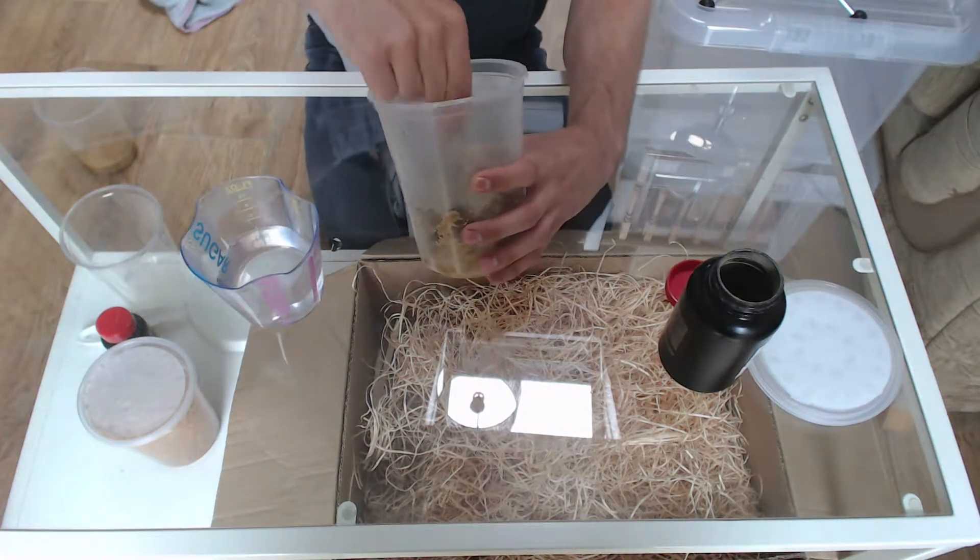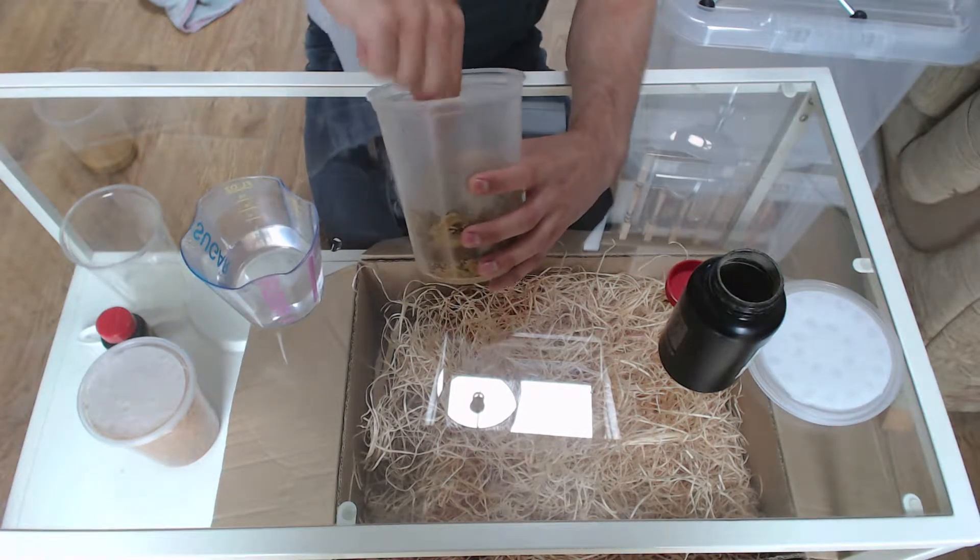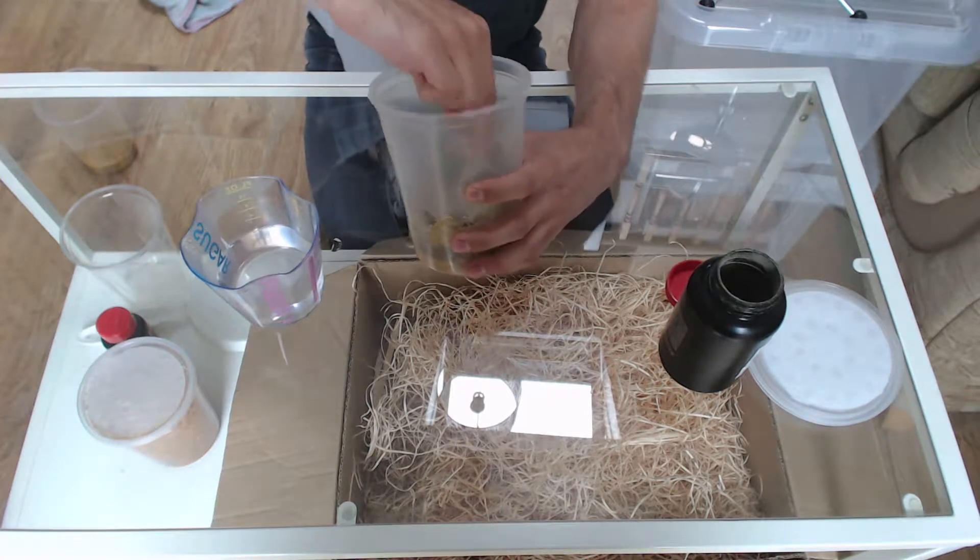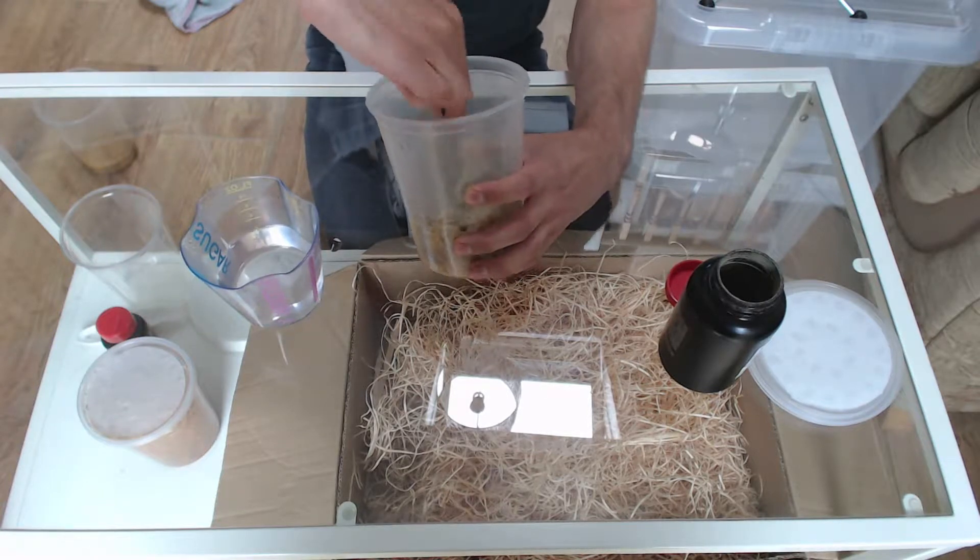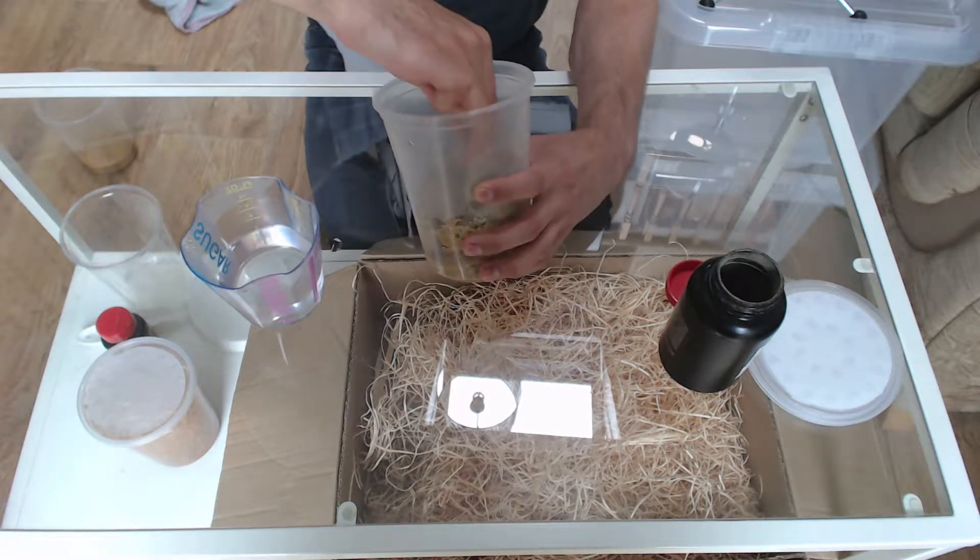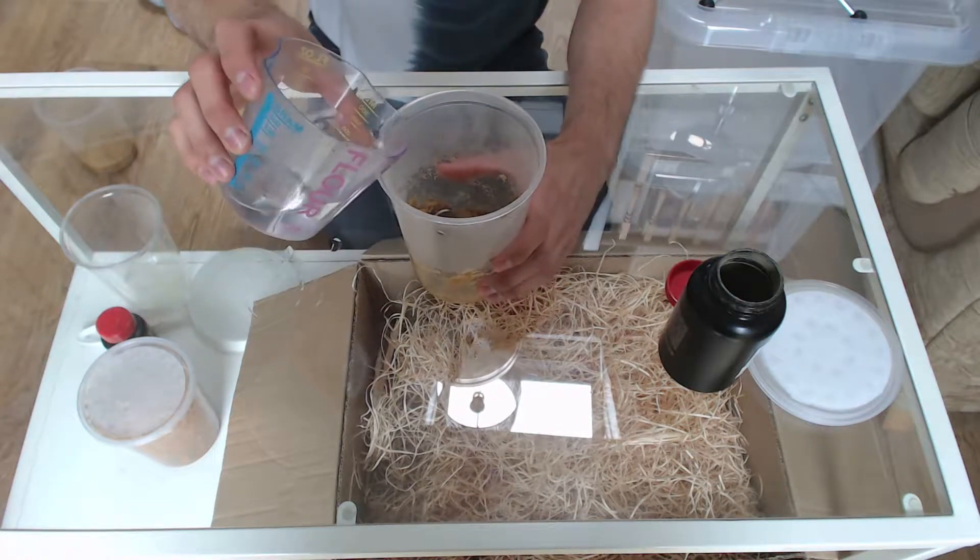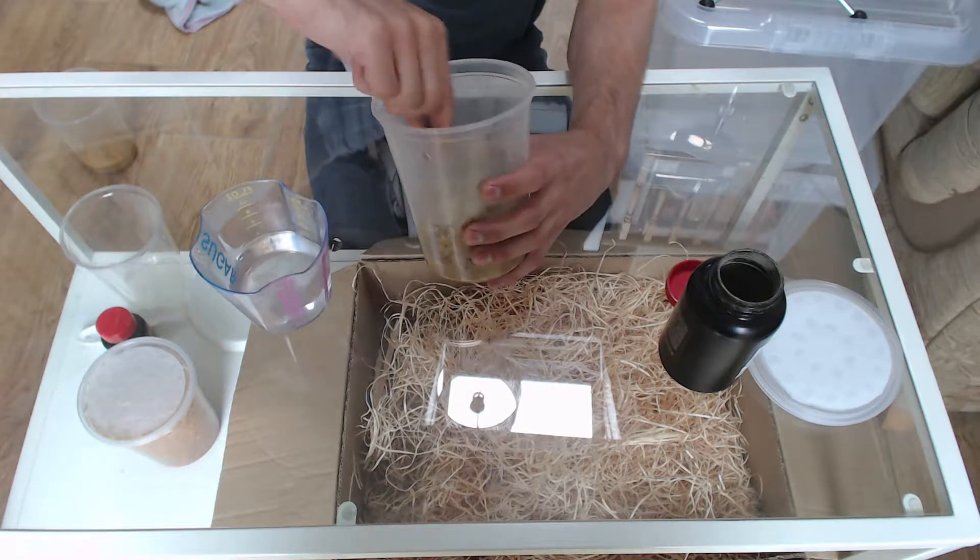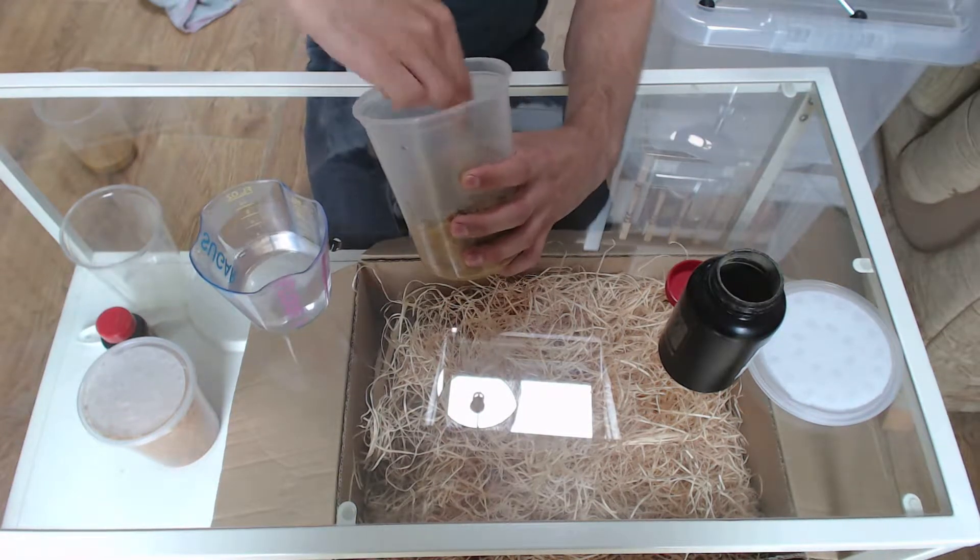Basically, the consistency I'm after is one that makes it easy to tap the media down, so that it's sort of a flat layer at the bottom of the cup. If it's too dry, it won't tend to do that. It needs a little bit more even.